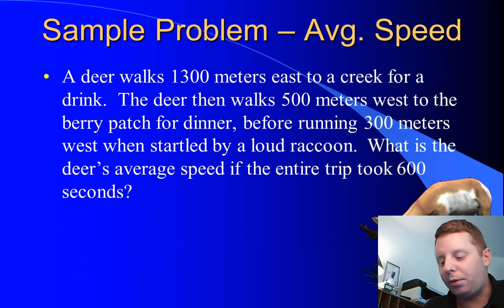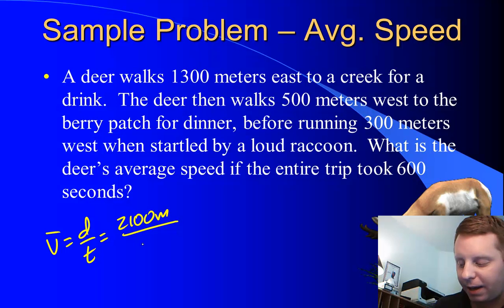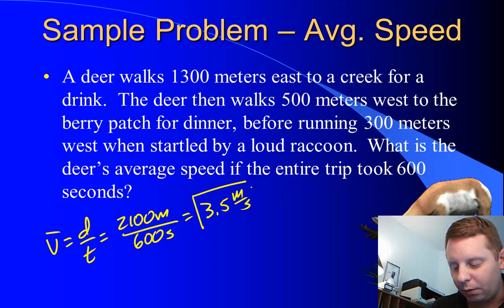If we go back to our deer problem, let's assume that we have the exact same action the deer took, but it all occurred in 600 seconds. What is the deer's average speed? Well, average speed is distance divided by time. We said our distance traveled was 2100 meters, and our time was 600 seconds. So 3.5 meters per second was our deer's average speed.